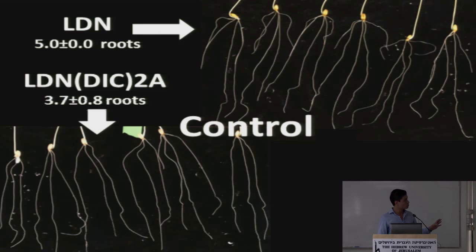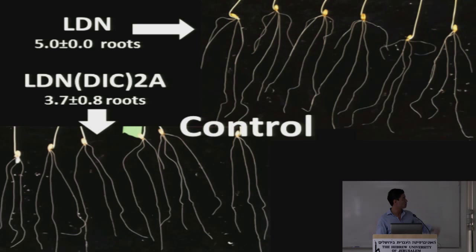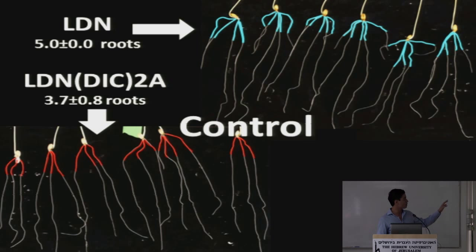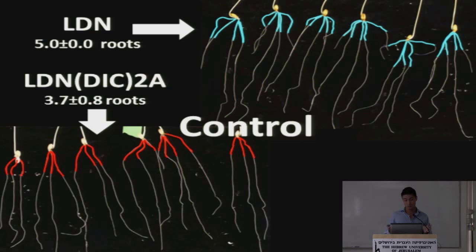In control conditions, we got the expected constant phenotype of five roots in Langdon, while in the substitution line we got what we expected: around 3.7 roots on average. Sometimes it also has five or four roots, but most of the time three roots.